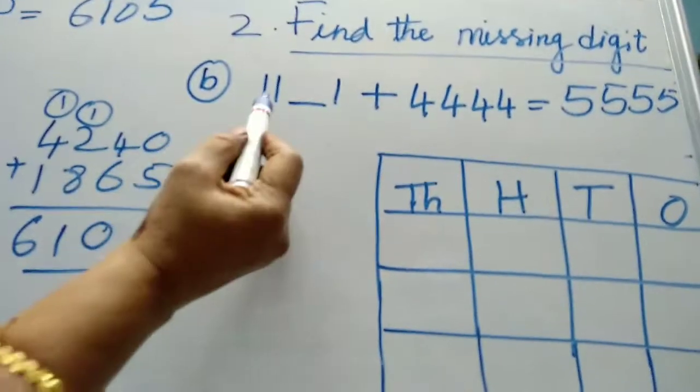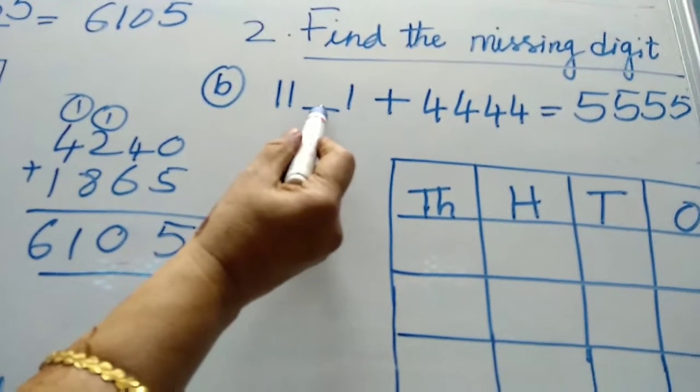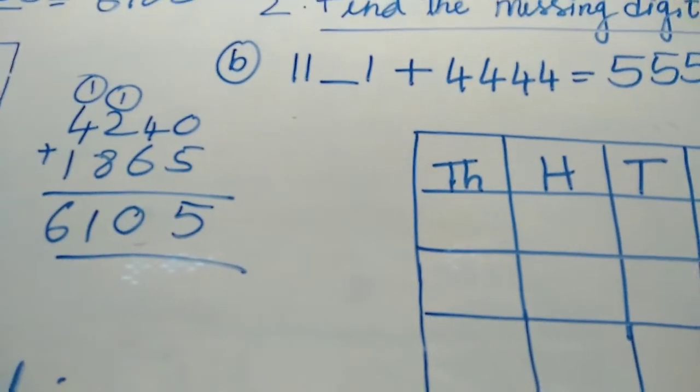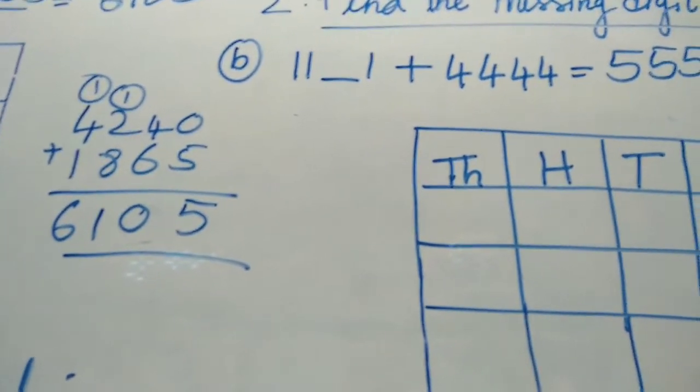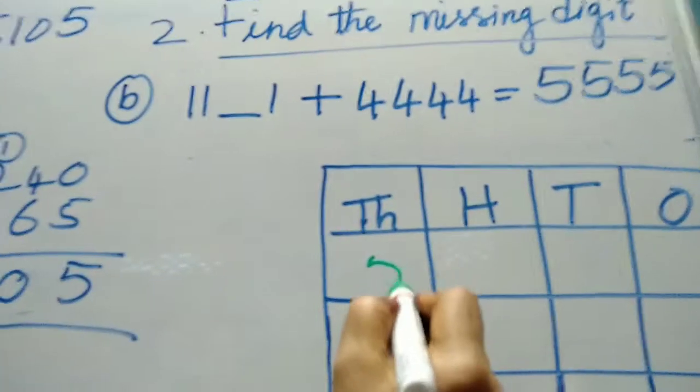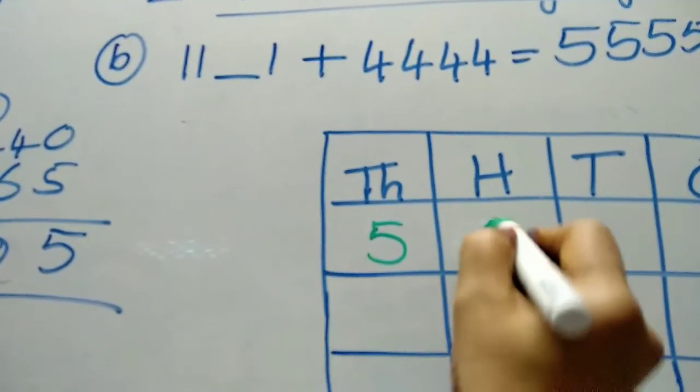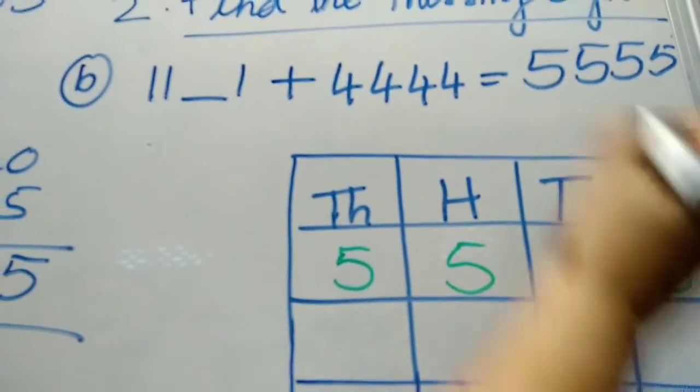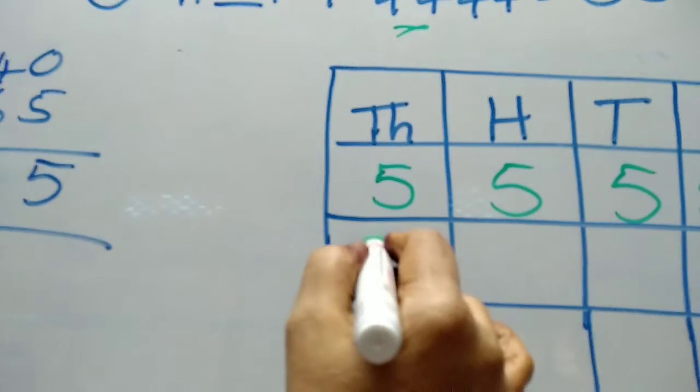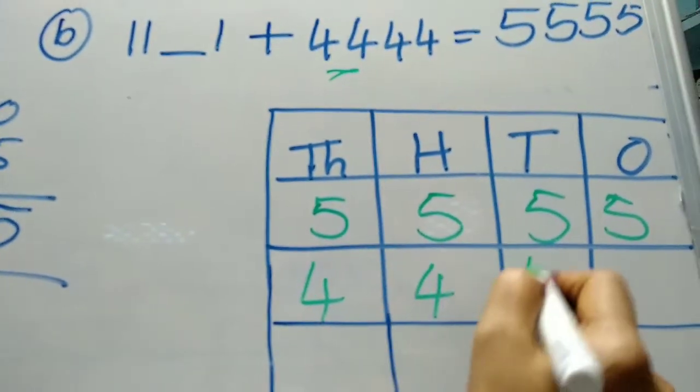Second bit is find the missing digit. They have given 1, 1 digit is missing here. We have to find the next digit. So this how we have to do. Write the sum total here. 5, 5, 5, 5. This total we should write. And 1 addend you subtract. 4, 4, 4, 4. Subtract this.